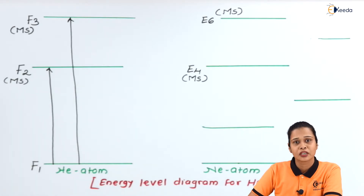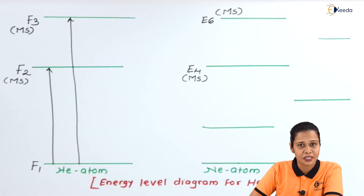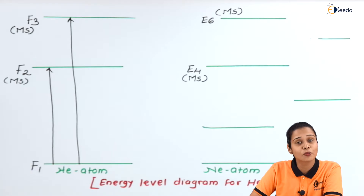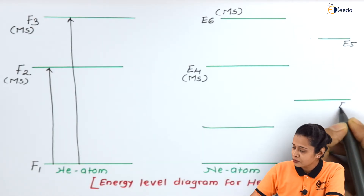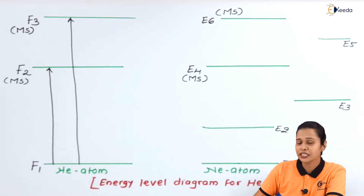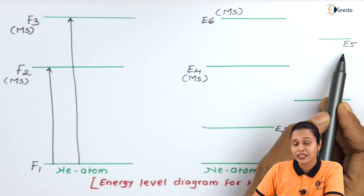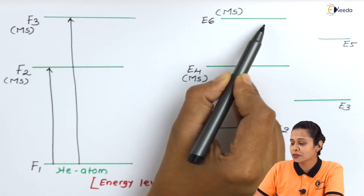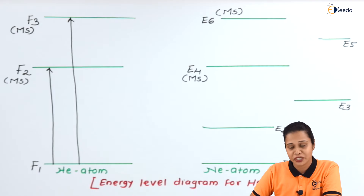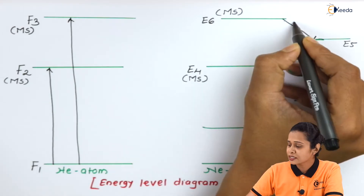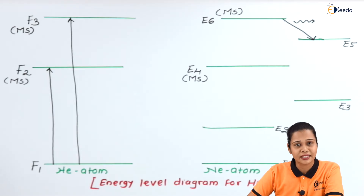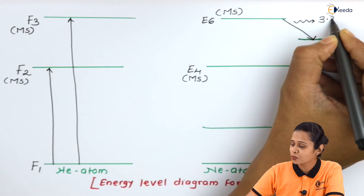For laser action, two things are very important: a metastable state and population inversion. Here E6 and E4 are both metastable states for Neon. The energy levels of Neon are E6, E5U, E4, E3, E2, and ground state E1. There are more particles in E6 while E5U is virtually empty, so population inversion is achieved between E6 and E5U, resulting in stimulated emission. The transition from E6 to E5U gives a laser wavelength of 3.39 micrometers, which is in the IR region.